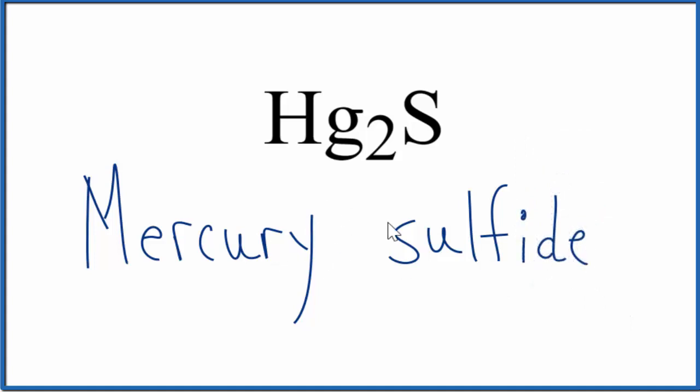So far we have mercury sulfide as the name for Hg₂S, but remember mercury, that's a transition metal, so we need to put a Roman numeral between here.